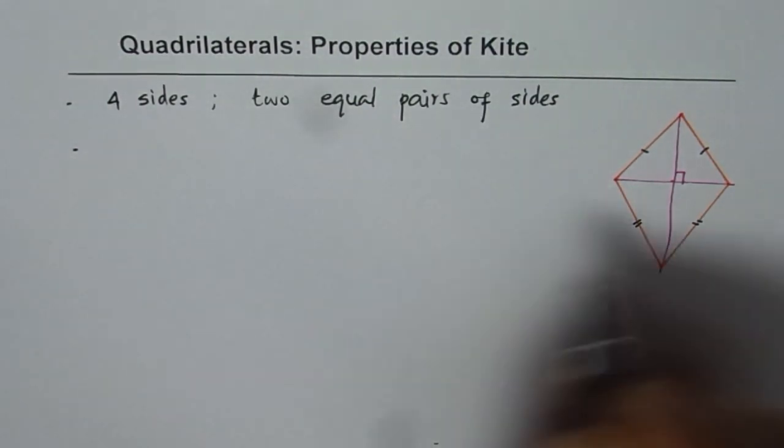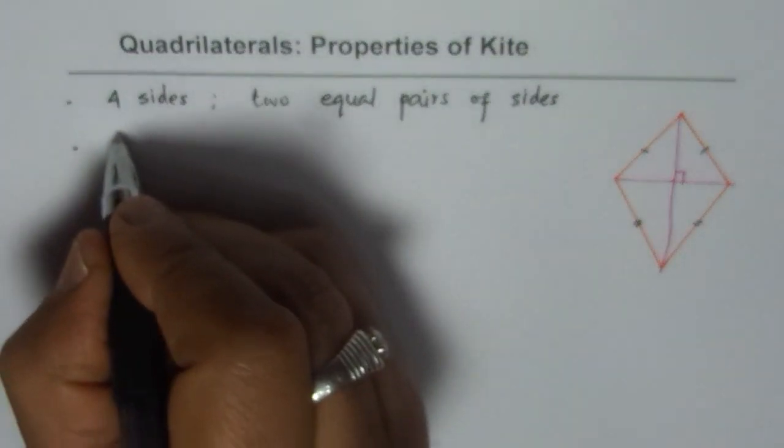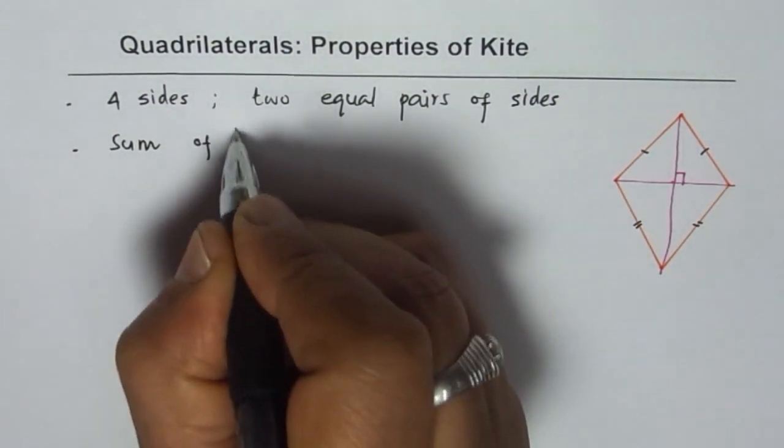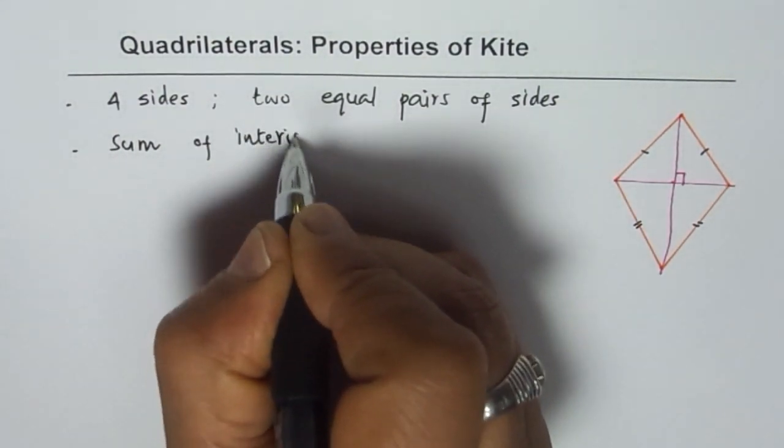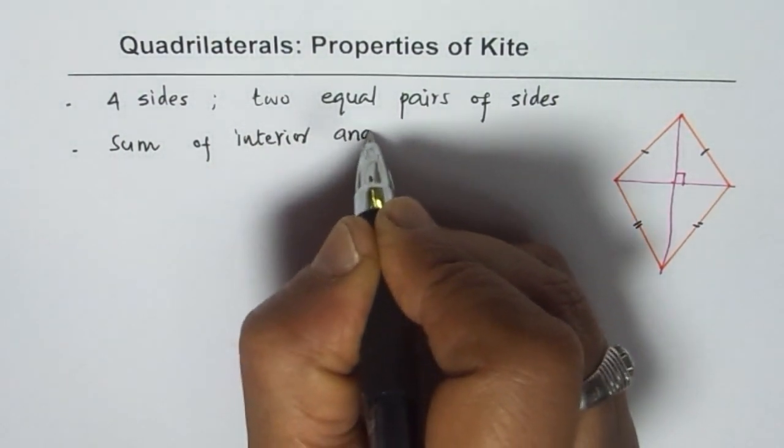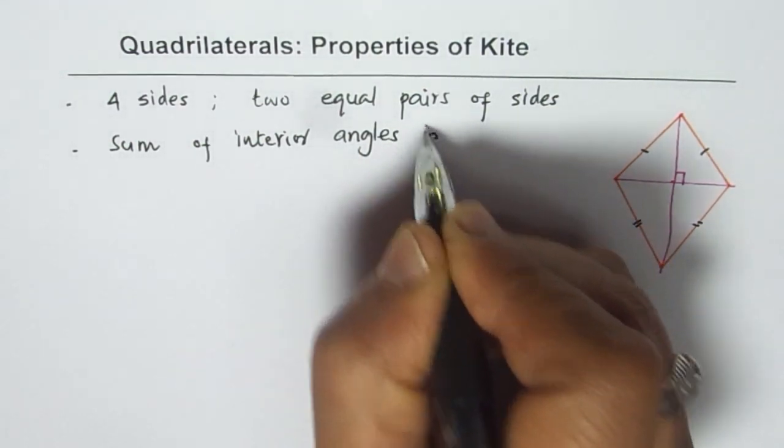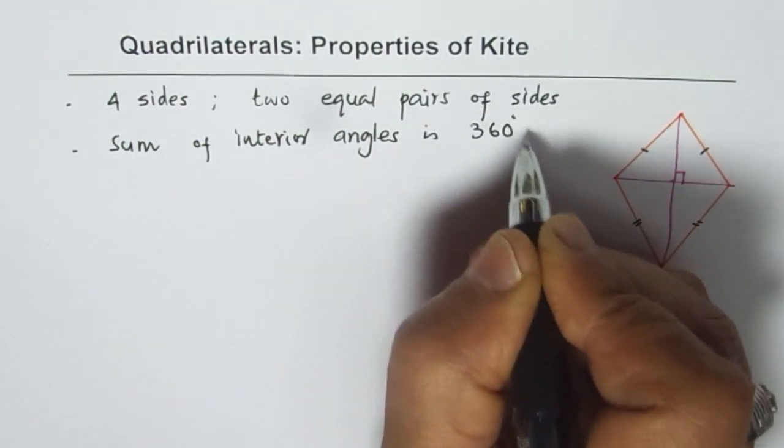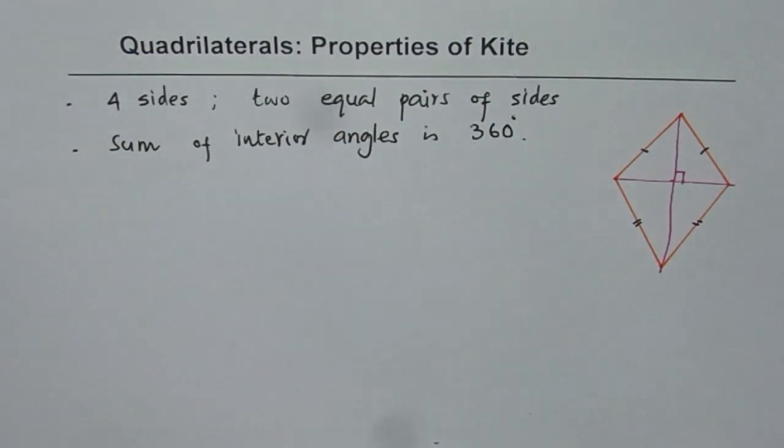Now if you sum the angles, the interior angles, then sum of interior angles is 360 degrees as it is for any quadrilateral. So a quadrilateral will have four sides and sum of its interior angles will always be 360. So when you add them up, it will be 360 degrees.